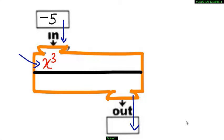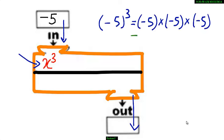If minus 5 gets into the machine, the value of the algebraic expression is minus 5 the whole cube. That is nothing but minus 5 into minus 5 into minus 5, which is equal to minus 125. So if minus 5 gets into the machine, it comes out as minus 125.